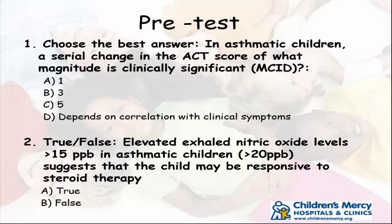There are some CME questions. Don't tell answers out because at the end we'll discuss them. So in asthmatic children, a serial change in the ACT score of what magnitude is significant? This is important because as you do the asthma control test, do you want to know between today and the next visit three months later whether you actually did something useful, or was it just chance?